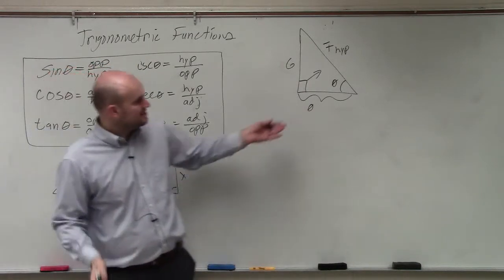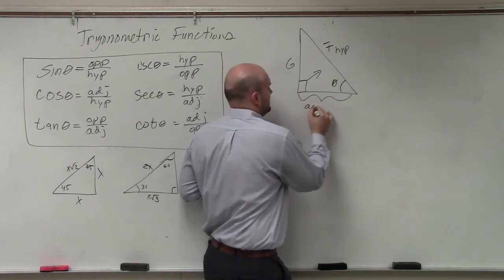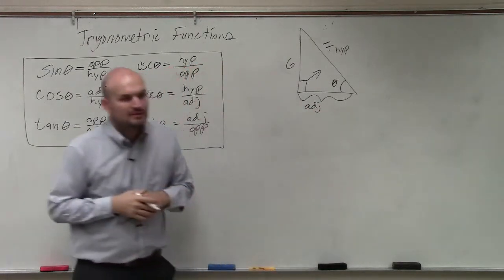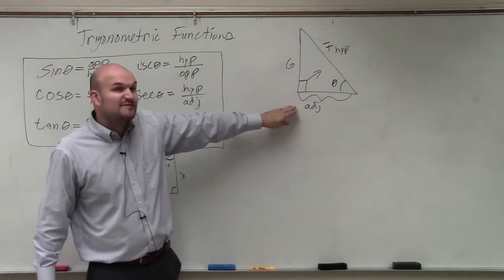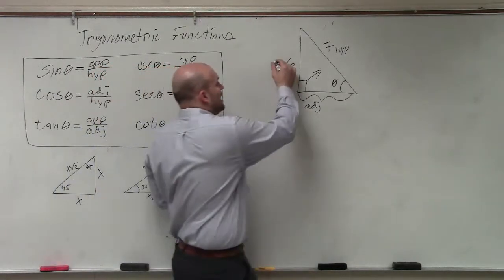But the problem is, we don't have a value for theta. I'm sorry, what am I doing? That's our adjacent side. That's adjacent. We don't have a value for adjacent. So therefore, if that's adjacent and that's hypotenuse, then this is our opposite side.